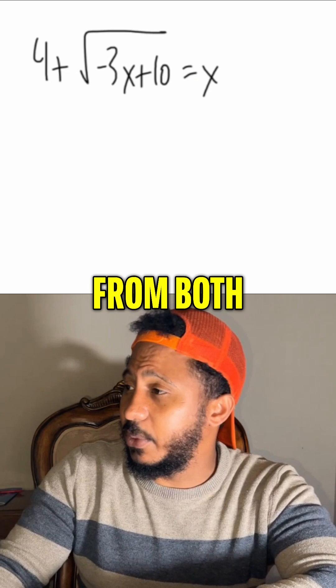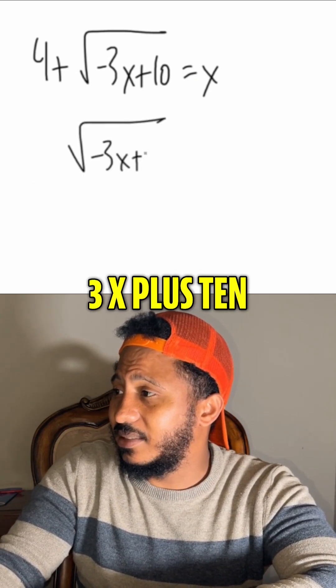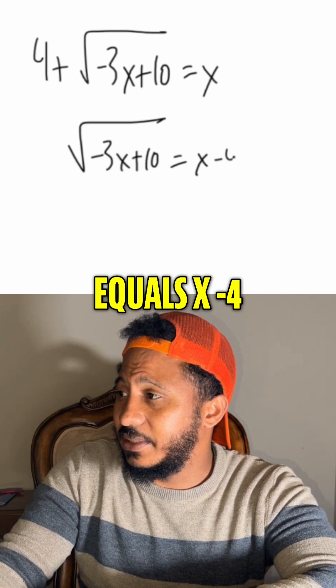So to isolate the radical, we first subtract 4 from both sides. So we get the square root of negative 3x plus 10 equals x minus 4.